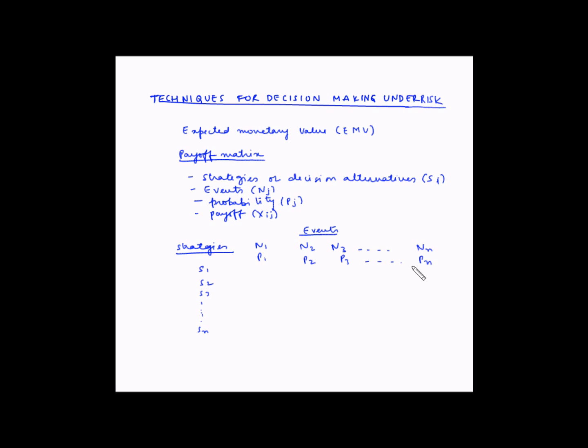And the payoffs are placed right at the intersection of the strategies and the event. So X1,1 is the payoff. Similarly, X2,1 and so on. For the second column, it will be X1,2, X2,2, and so on.